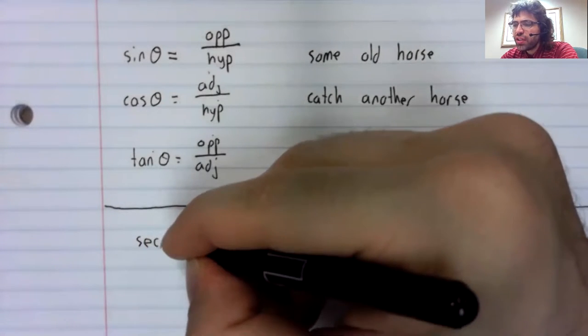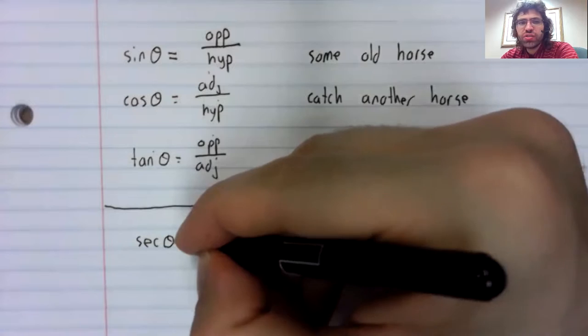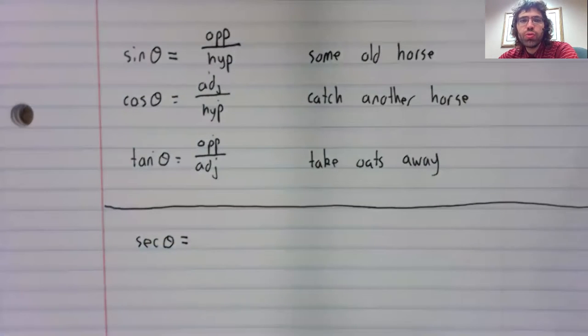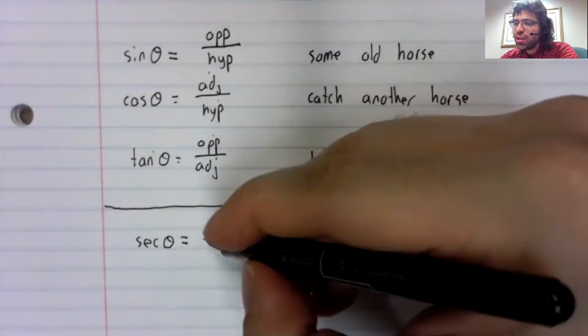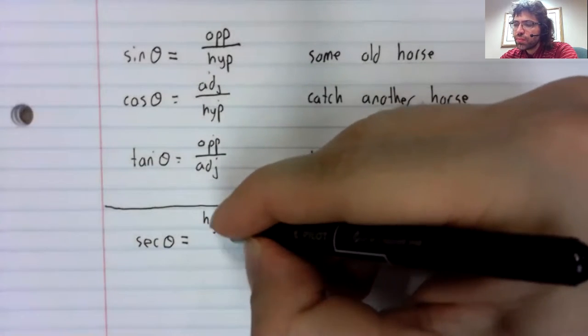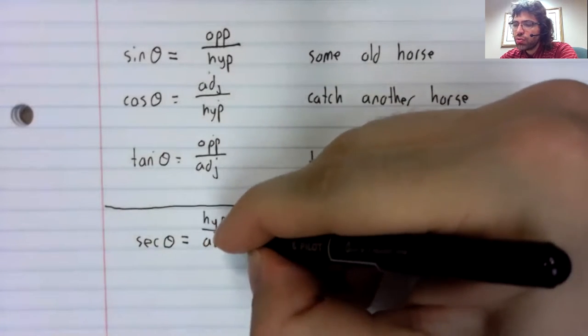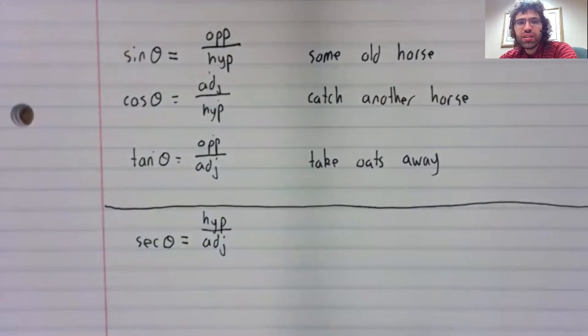The secant is the reciprocal of the cosine. So we flip these: hypotenuse over adjacent.